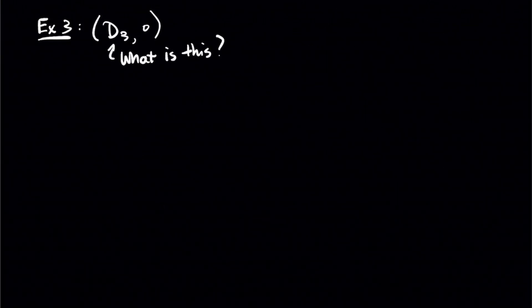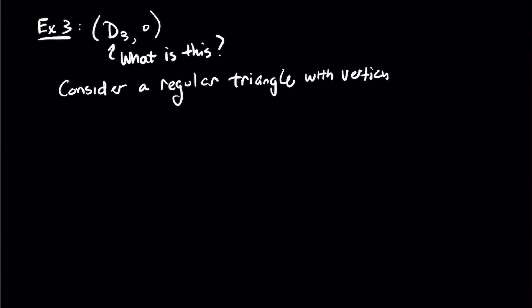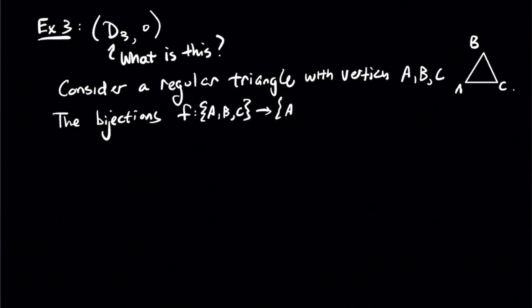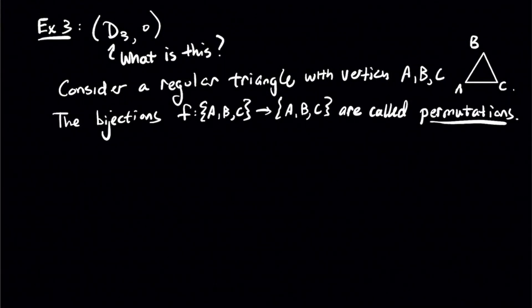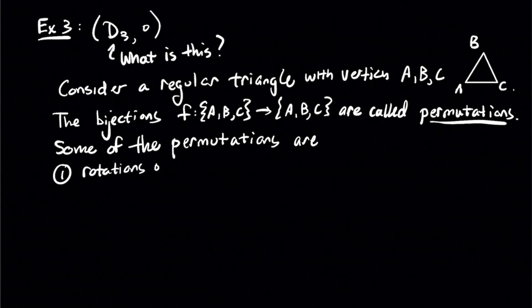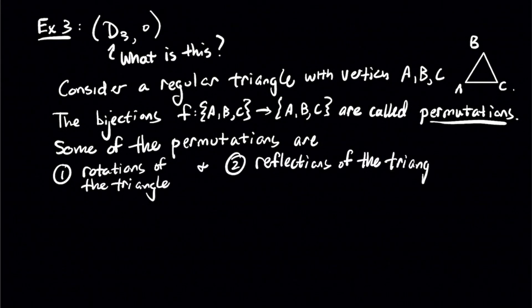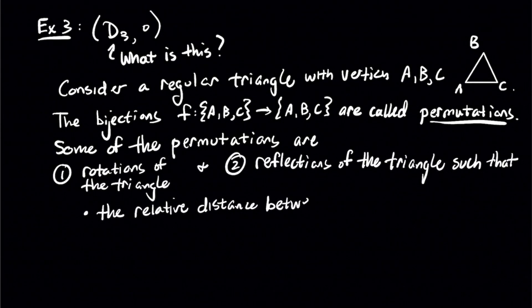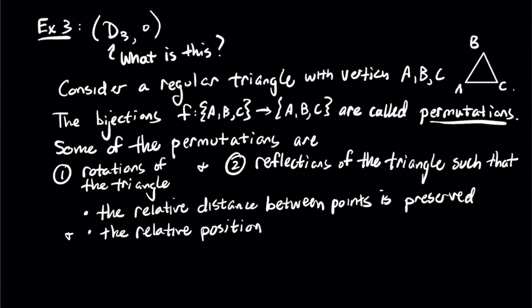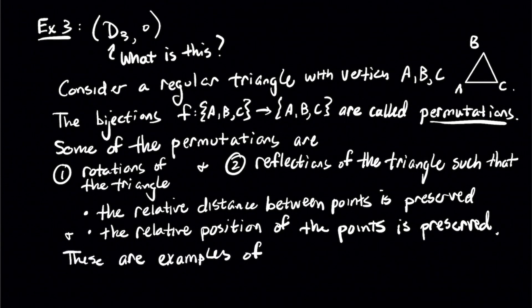Example 3 is some set D3 with function composition. We take an equilateral triangle with vertices a, b, and c. The bijections from {a, b, c} to itself are called permutations. Some of these permutations are rotations of the triangle, and some are reflections, such that the relative distance and position of points are preserved. These types of rotations and reflections are called rigid motions. For our triangle, we have 6 of them, and we're going to visualize each one.